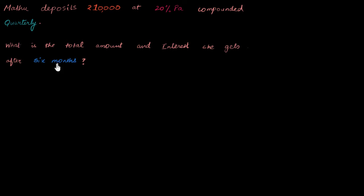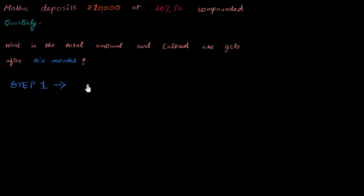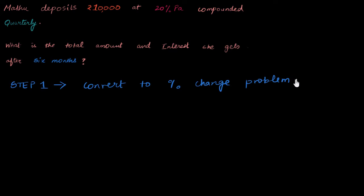So after six months, I need to find how much this 10,000 will become. Now I know that a compound interest problem is just a percentage change problem in disguise. So my step one is to convert this compound interest problem into a percentage change problem. That's my first step, and that's probably the most important step, because after that the problem is not compound interest anymore.